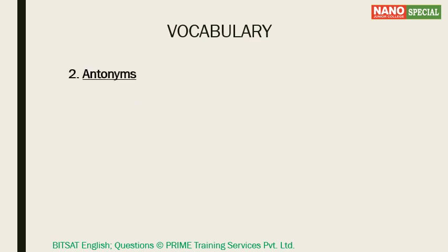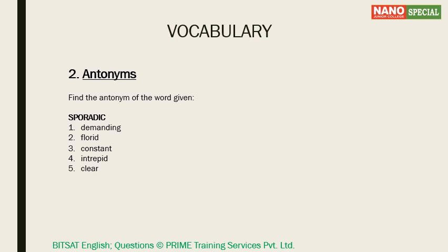The next question type is antonym, where we are dealing with opposites. You are given a word and have to find its opposite. Let's look at a question: find the antonym of the word 'sporadic.' What is the meaning of sporadic? Sporadic means occurring at irregular intervals, scattered or isolated. For example, 'sporadic fighting broke out' or 'sporadic gunfire was heard.' So it basically means occasional, infrequent, or irregular.